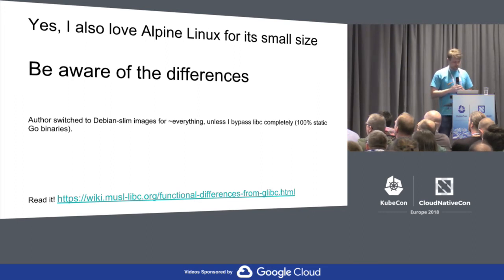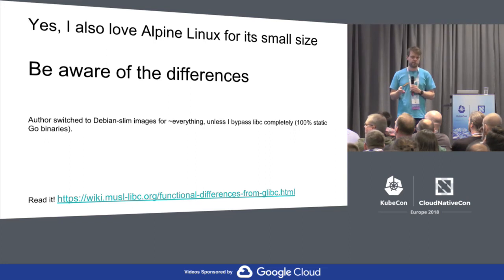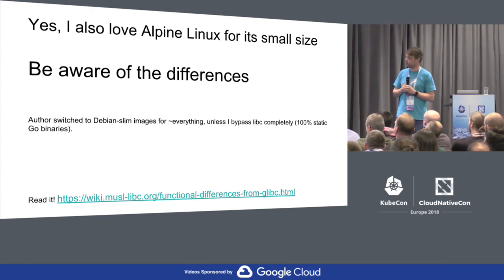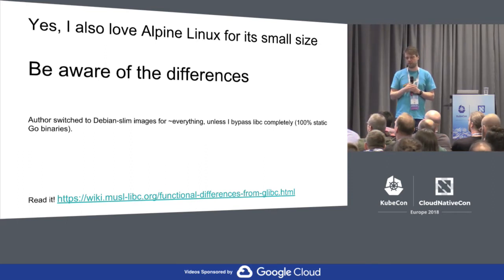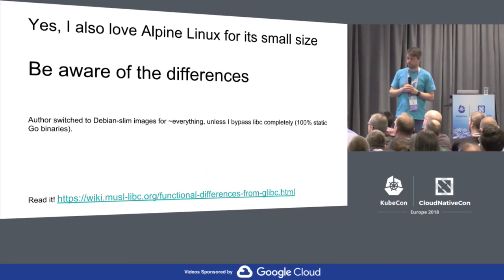So what I'll leave you with: I love Alpine because it's so super small, but it has a lot of differences in the libc implementation so you have to be aware of them. I switched to Debian Slim — which is 70 MB — for all the stuff, unless I have a statically compiled Go binary that I just put in Alpine because I'm not using the libc. Go to that URL and read it and decide what you want to do.